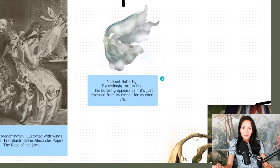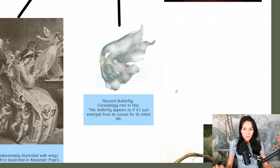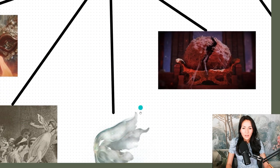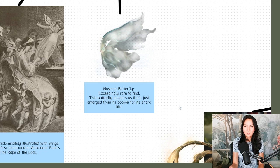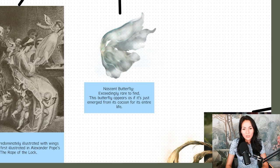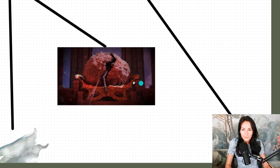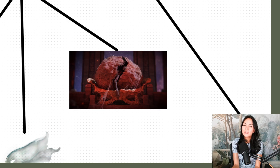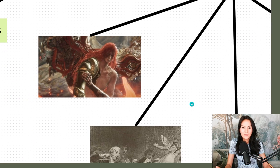Fairies have been drawn and illustrated with butterfly wings ever since the late 1700s. The nascent butterfly is one of the three butterflies that you can find. This to me looks a lot like the same kind of translucent sickly material as is on Miquella's back right here. And nascent means just coming into existence.